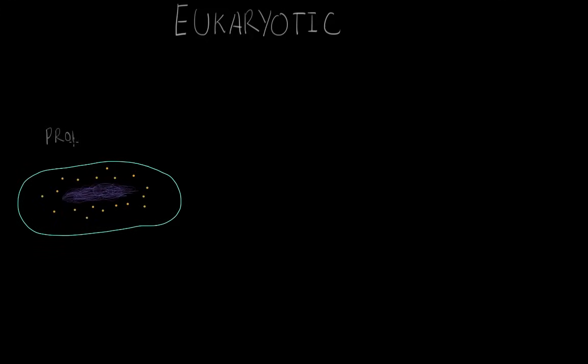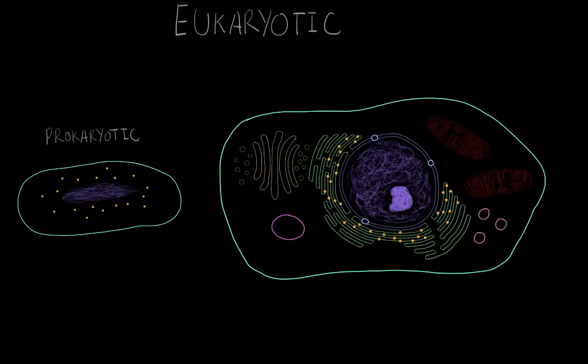All living things are made of cells, and humans and all multicellular organisms are made of a type of cell called eukaryotic cells. But what is it that makes a cell eukaryotic? To answer that question, let's look at the two major types of cells. On the left is a prokaryotic cell, and on the right is a diagram of a eukaryotic cell. So let's define eukaryotic cells as how they're different than prokaryotic cells.